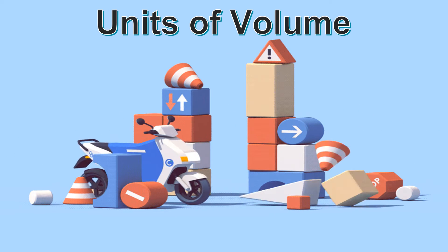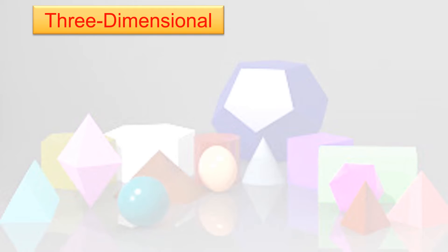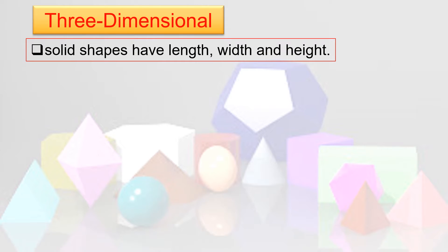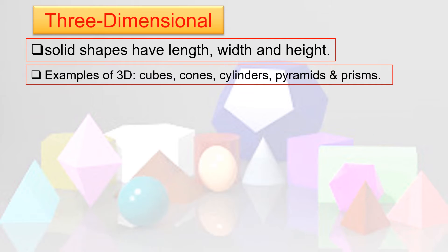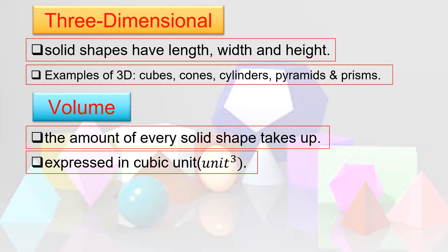Hello everyone. In today's topic we are going to talk about units of volume. If we are talking about volume, we are talking about three-dimensional figures. These are solid shapes that have length, width, and height. Examples include cubes, cones, cylinders, pyramids, and prisms. 3D is short for three-dimensional. Volume is the amount of space every solid shape takes up, and it is expressed in cubic units, or units to the power of 3.